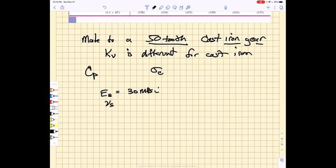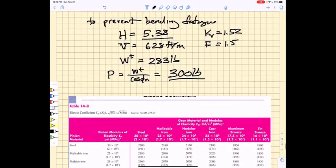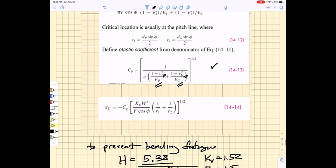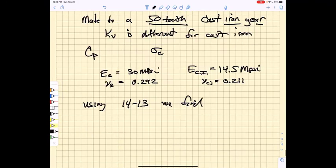The elastic modulus for steel would be 30 MPSI. The Poisson's ratio for steel would be 0.292. The elastic modulus for cast iron is about 14.5 MPSI, and the Poisson's ratio for cast iron is 0.211. So we plug those things into this equation 14-13, and we calculate an elastic coefficient of 1,817 root PSI.